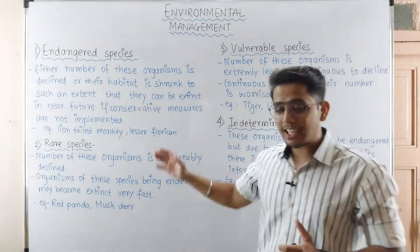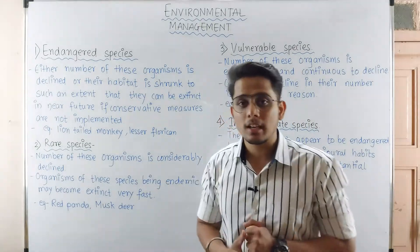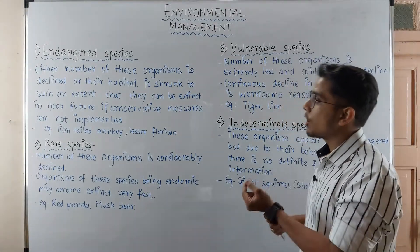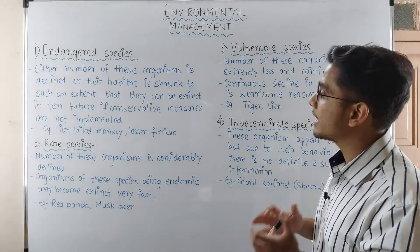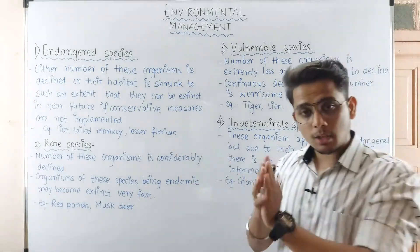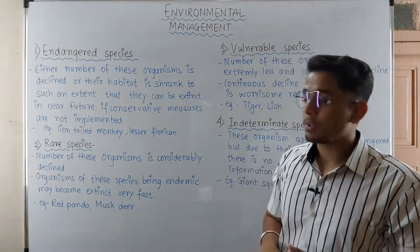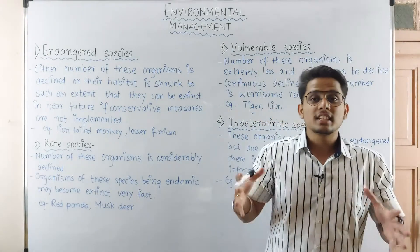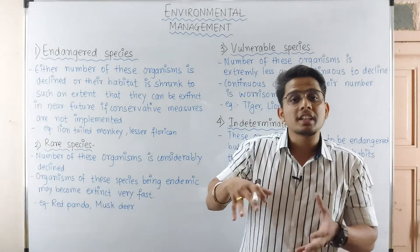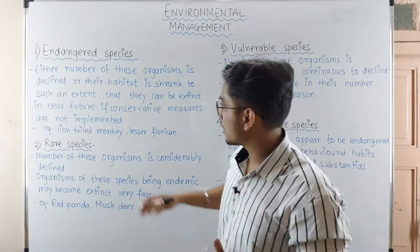Let's start with endangered species. The definition from the textbook says: 'Either the number of these organisms has declined, or their habitat has shrunk to such an extent that they can become extinct in the near future if conservative measures are not implemented.' The number of organisms is declining, meaning their count is continuously decreasing.